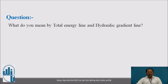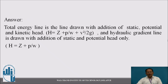Now, what do we mean by total energy line and hydraulic gradient line? The total energy line is drawn with the addition of static, potential, and kinetic head: H_total = z + p/w + v²/2g. The hydraulic gradient line is drawn with the addition of only static and potential head: h = z + p/w.